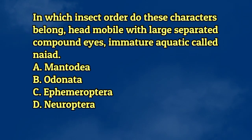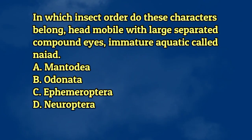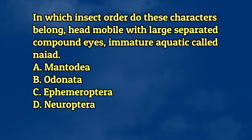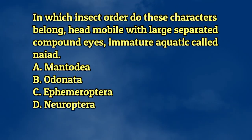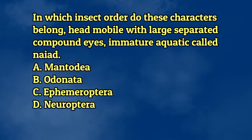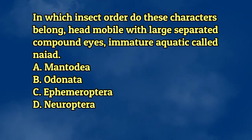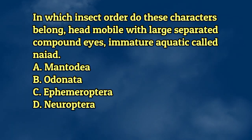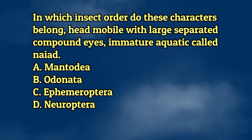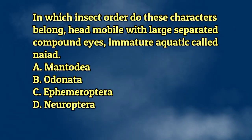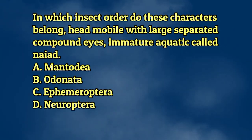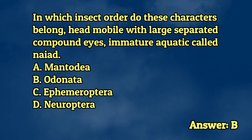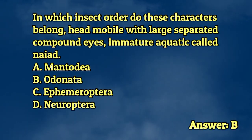In which insect order do these characters belong? Head mobile with large separated compound eyes, immature aquatic called Naiad. A. Mantodea. B. Odonata. C. Ephemeroptera. D. Neuroptera. The answer is letter B.